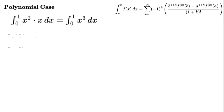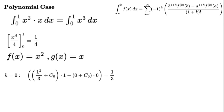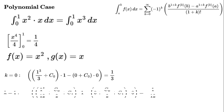The exact answer is x to the power of 4 over 4 evaluated from 0 to 1 equals 1 over 4. Use the main formula with f(x) equals x squared, g(x) equals x. Antiderivatives: the integral of x squared to the power of 1 equals x cubed over 3 plus c₀; the integral of x squared to the power of 2 equals x to the power of 4 over 12 plus c₀ times x squared over 2 plus c₁.